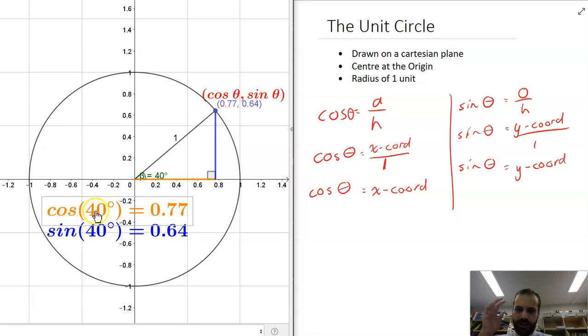We can say that cos(40°) is equal to 0.77, which happens to be the coordinate of that dot, and sin(40°) is equal to 0.64, which happens to be the coordinate of that dot.